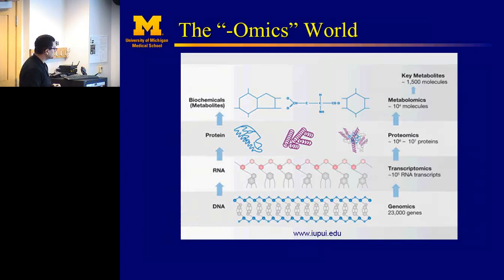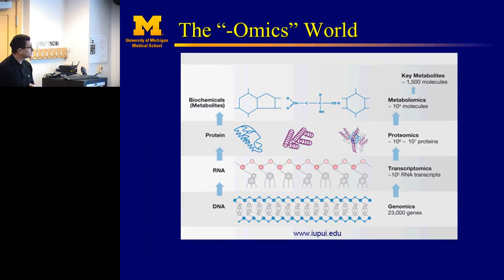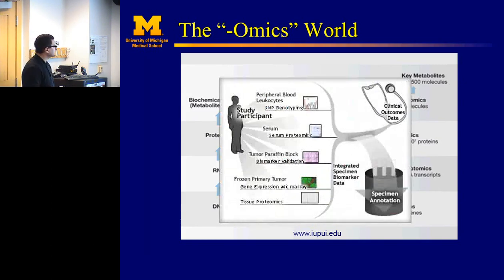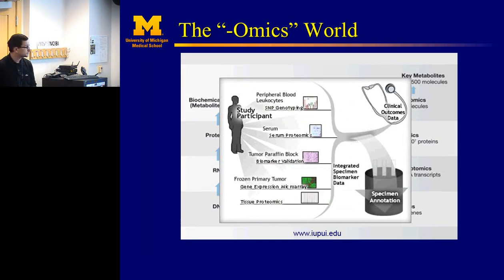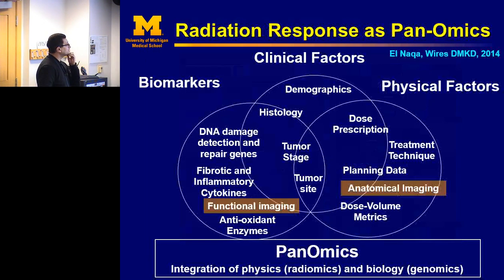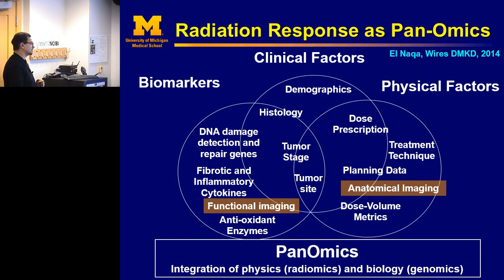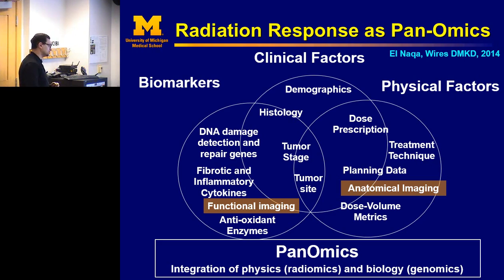The omics world — as you know, the biology diagram goes from DNA to RNA to protein to metabolites, with different omics at each level. Like every other field, we start by taking tissue samples, either from blood or from the tumor itself, banking these samples, collecting outcomes, and running all kinds of omics analyses. One can look at radiation response as a pan-omics: there are biomarkers related to DNA damage and repair, clinical factors, and physical factors. Imaging plays an important role — whether anatomical or functional. Pan-omics specifically means the integration of physics (imaging, i.e., radiomics) and biology (proteomics and genomics).